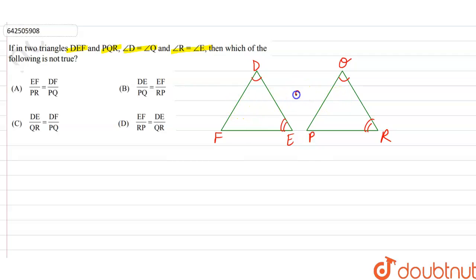So these two triangles are similar to each other, reason being triangle DEF is similar to triangle QRP by double A similarity criteria.